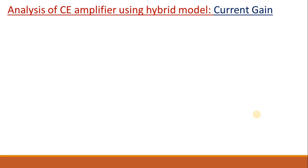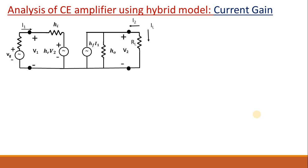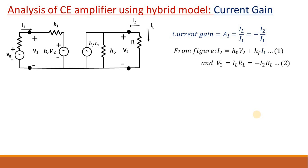Let's calculate the current gain. Current gain AI = IL / I1. From the circuit, IL = −I2. Applying KCL at the output side: I2 = HO·V2 + HF·I1, and V2 = IL·RL = −I2·RL. Note: HI = H11, HR = H12, HF = H21, and HO = H22. These are the standard notations used for transistor analysis.